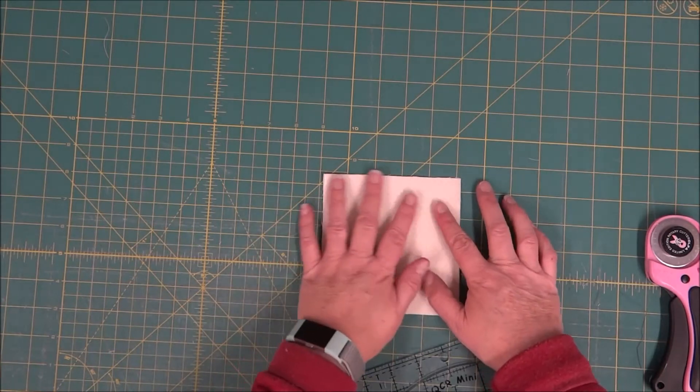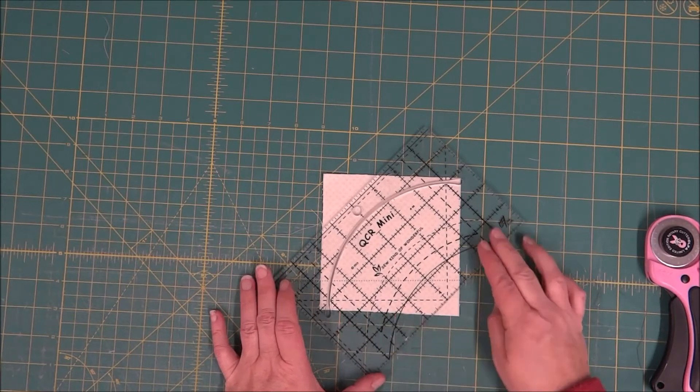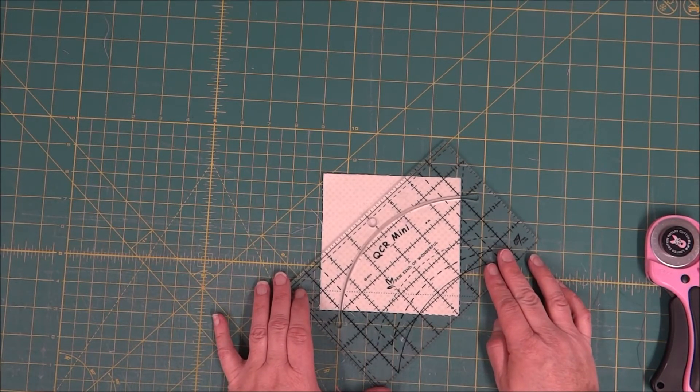Then I'm going to take my ruler, and I'm going to notice these registration lines and put them right on the corners of that cut square.